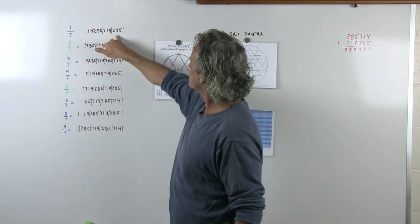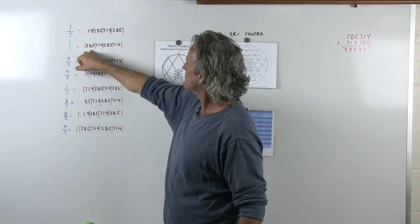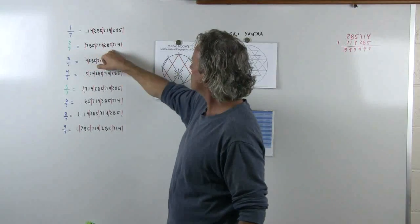The sequence is 2, 8, 5, 7, 1, 4, repeating. The 2 over 7 actually starts off perfectly with the family number group: 2, 8, 5, 7, 1, 4, 2, 8, 5, 7, 1, 4.